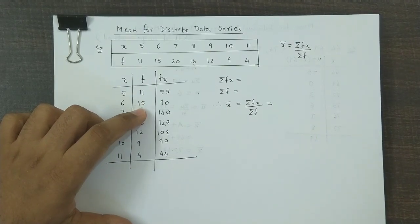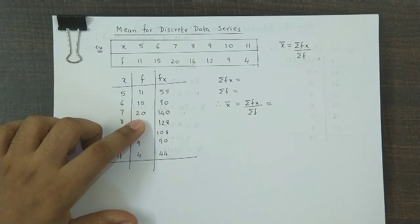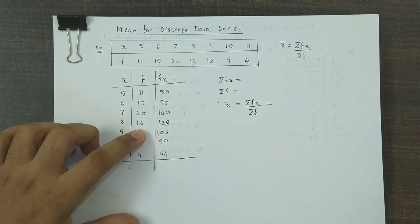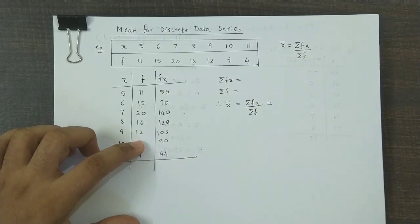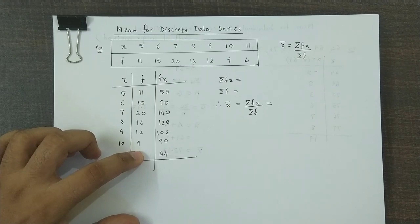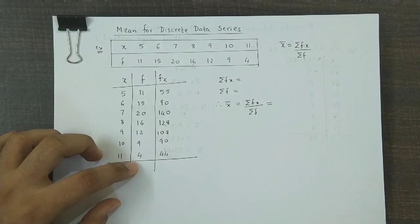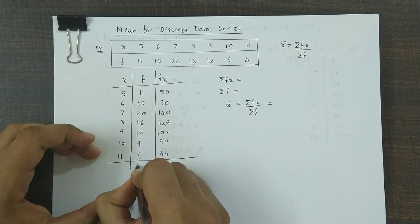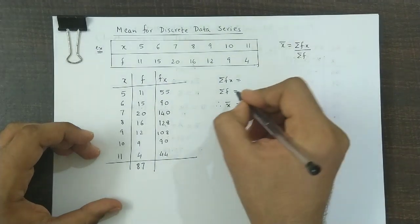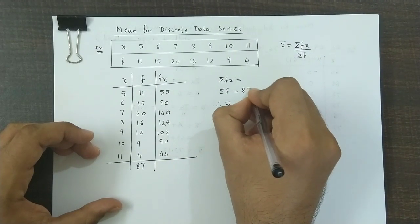We have 11 plus 15 plus 20 plus 16 plus 12 plus 9 plus 4. The total frequency is 87. Summation of f is 87.